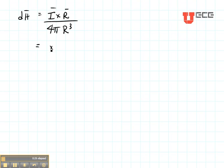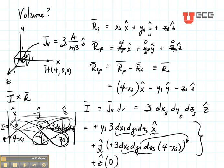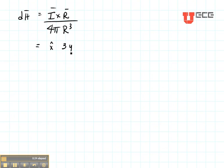That's going to be x̂ times 3 DV, 3YS, DXS, DYS, DZS.